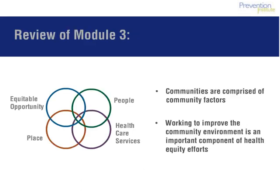In the previous module, we introduced a set of 18 community factors that influence health and safety. These factors were organized into four clusters: people, place, equitable opportunity, and health care services. We noted that each of these factors have been linked to health behaviors and outcomes in the research literature. Finally, we emphasized that each factor is relevant and can be acted upon at the community level.